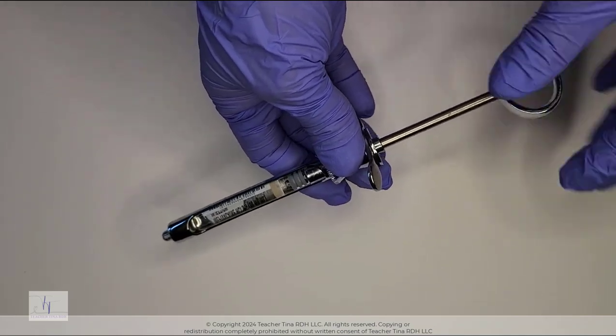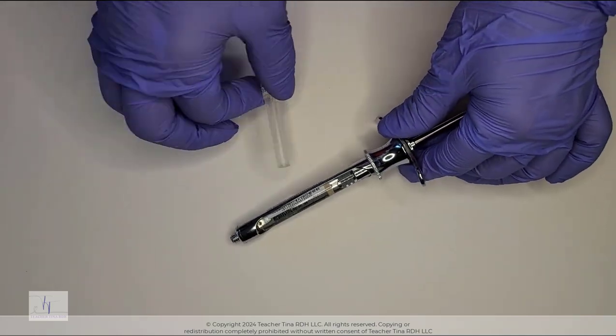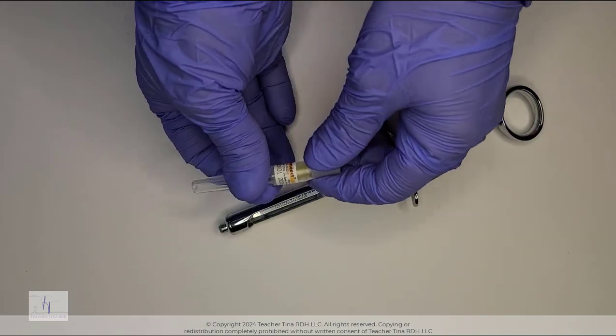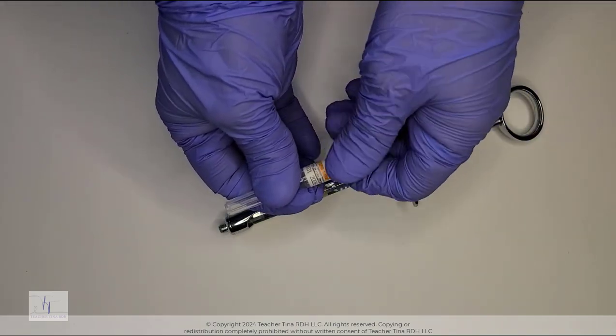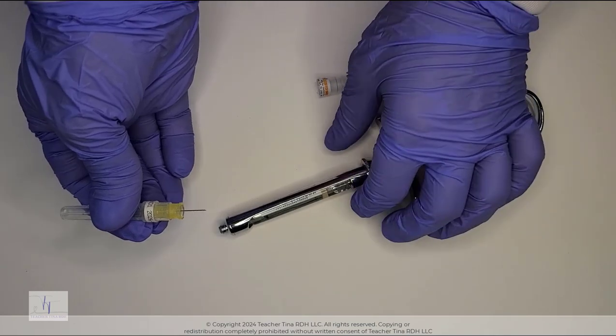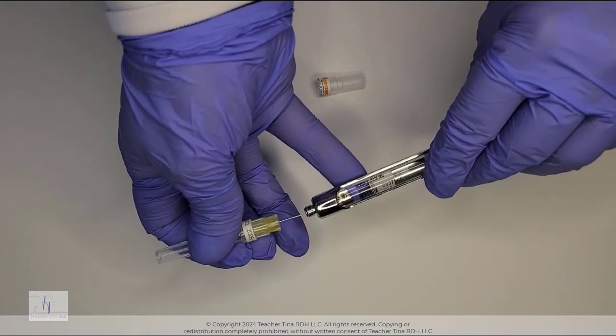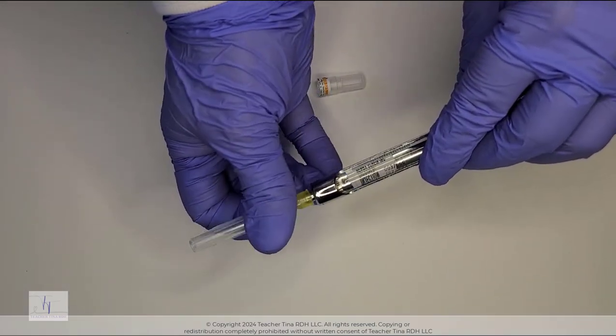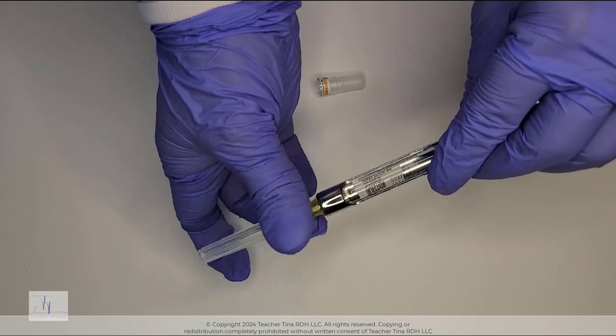Pull back on the thumb ring to ensure that the rubber stopper and harpoon are engaged. Remove the back end of the needle and screw it into the syringe at the needle adapter side, being sure to hold it near the hub of the needle.